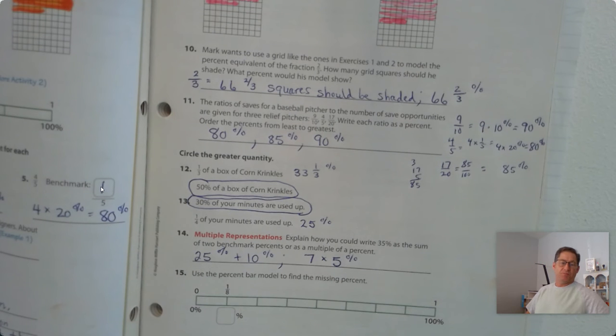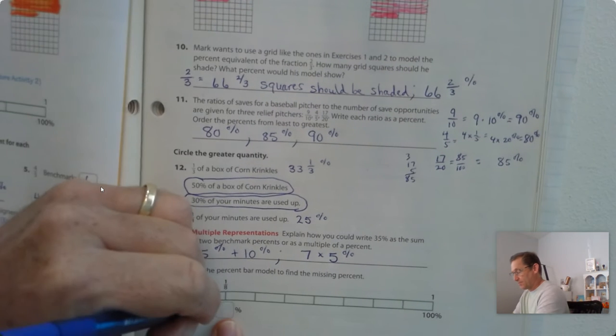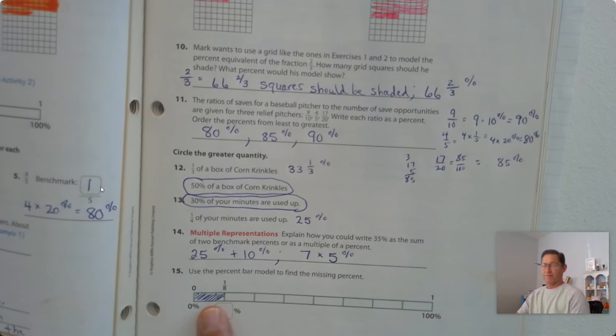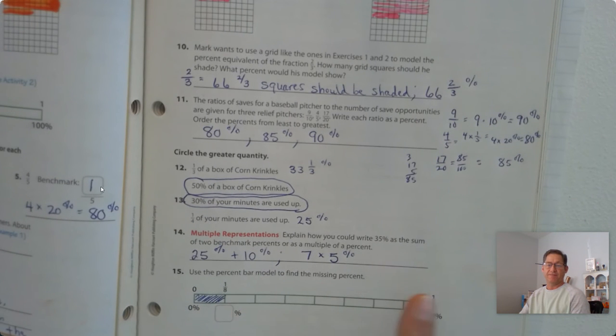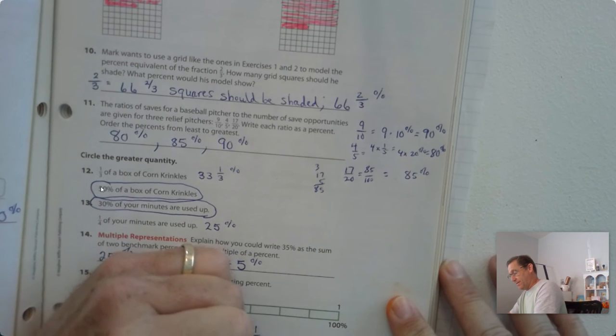Number 15. Use the percent model to find the missing percent. So we have one-eighth, so let's shade one-eighth, and we notice we have obviously eight sections because they're broken into eights. One, two, three, four, five, six, seven, eight. So we have one-eighth times 100.